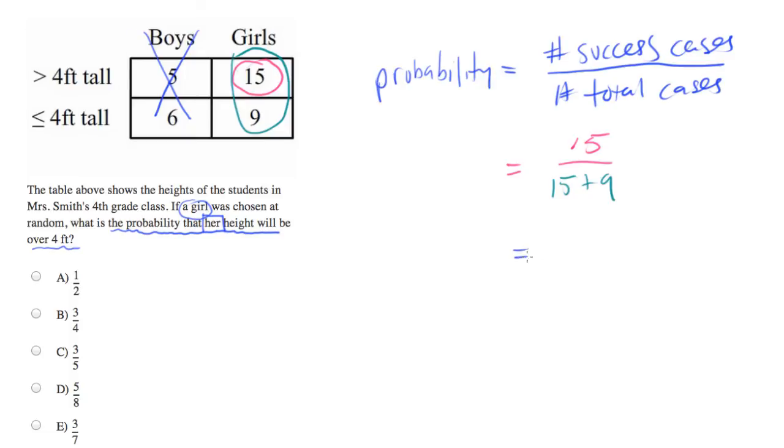And we simplify this equation and we end up with fifteen over twenty-four, or five over eight, which is D.